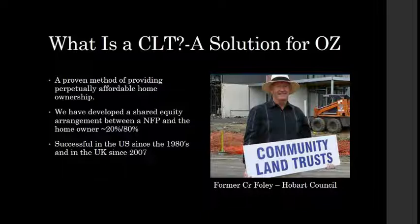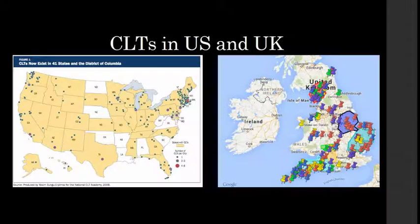We've developed a shared equity arrangement between a community or not-for-profit organisation and the homeowner. Typically that shared equity is 20% for the community organisation and 80% for the resident. CLTs have been very successful in the US since the 1980s. The first one was started in 1969 and then they rapidly propagated across the US through the 1980s and on from there. In the UK they've been going since about 2007.